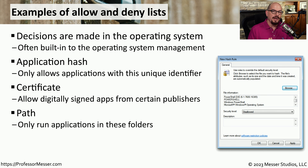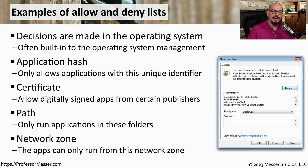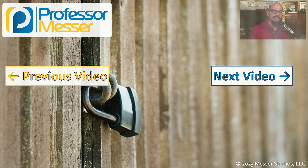Windows also allows you to allow or disallow applications running from a specific area of the drive. If an application is running from a different directory, you can configure a rule to prevent it from running. Windows also has the concept of network zones — you might be on a private network or a public network — and you can set rules that allow certain applications to work depending on what zone you happen to be in at that time.